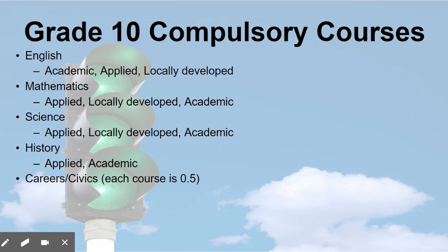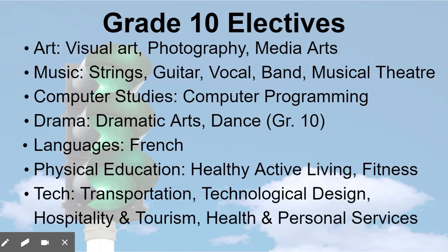In grade 10, there are five compulsory courses that you must pick: English, Math, Science, History, and Careers and Civics. You will also need to do some elective courses, and the school offers a variety of elective courses in different areas such as art, music, computers, drama, French, physical education, and technology.